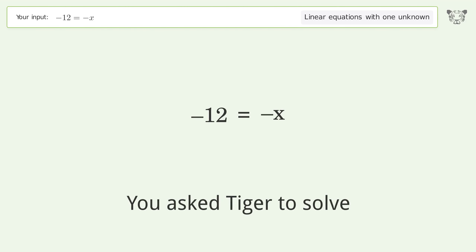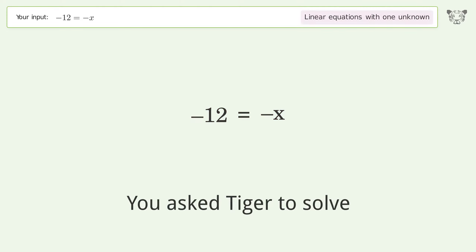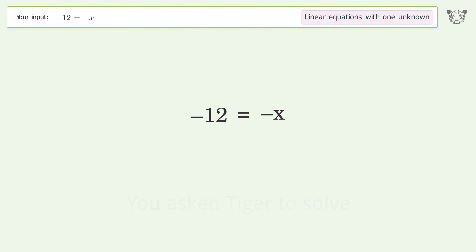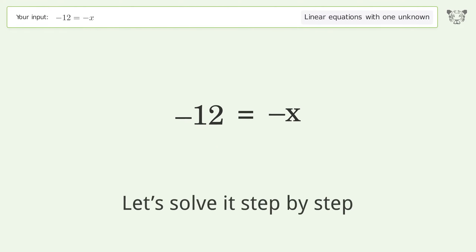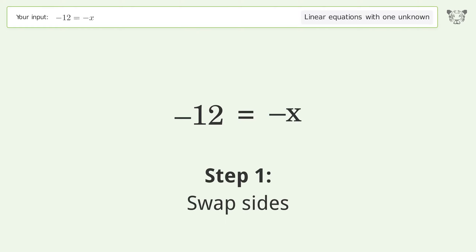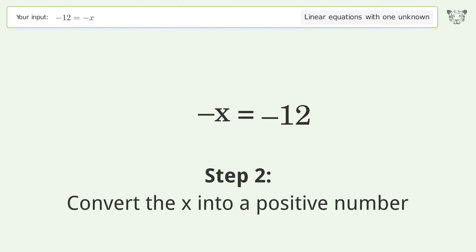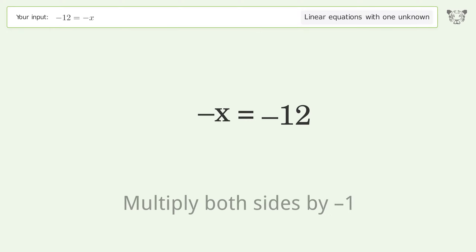Tiger is asked to solve a linear equation with one unknown. The final result is x equals 12. Let's solve it step by step. First, swap sides, then convert x into a positive number by multiplying both sides by negative 1.